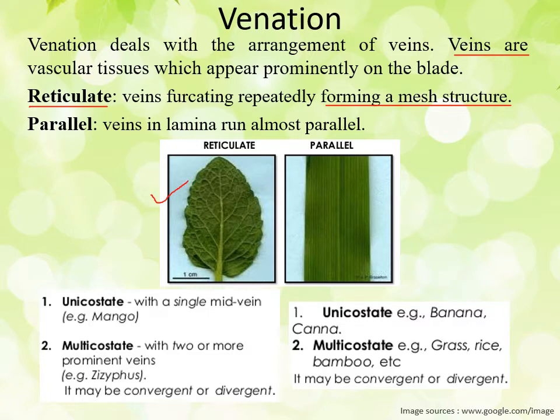The other form of venation is known as parallel venation, where the veins of different order are arranged parallel to each other. You can see all the veins of different order arranged parallel to each other. This kind of venation is known as parallel venation. Both these venation types — reticulate and parallel — are again divided into two subtypes.